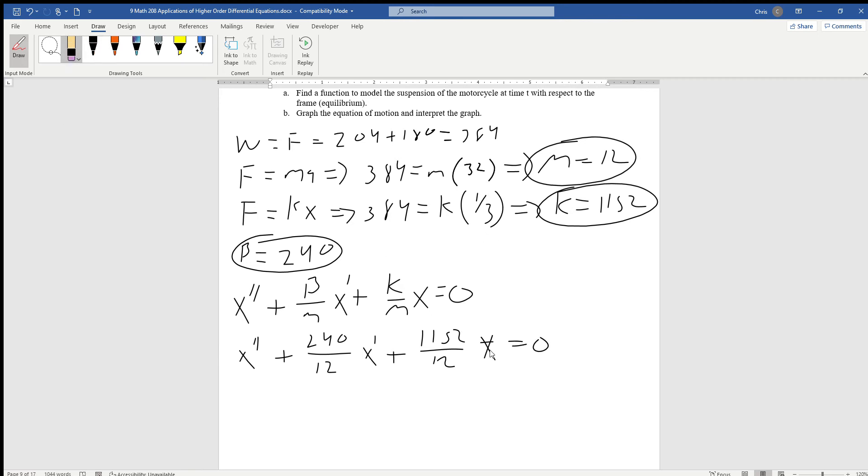If we divide, this one's going to be 20. So we get x double prime plus 20x prime, and I have to use my calculator for this one. Probably going to be close to 100, like 95 or 90 something. Let's see, 96.